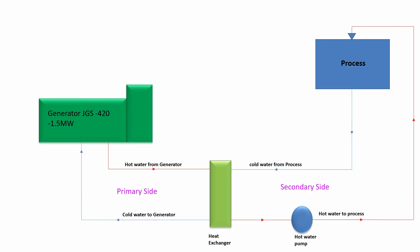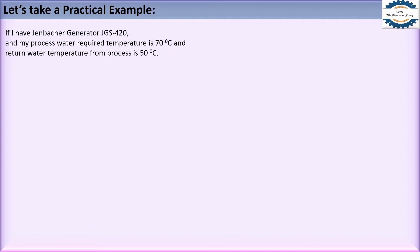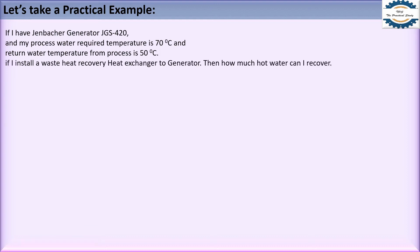Now the question is how this calculation can be done. For understanding, let's take a practical example. We have a JGS420 Jenbacher generator. Our process water required temperature is 70°C, and the cold water taken from the process is 50°C. If we install an after-recovery heat exchanger on the generator to use its waste heat, how much hot water can we recover?